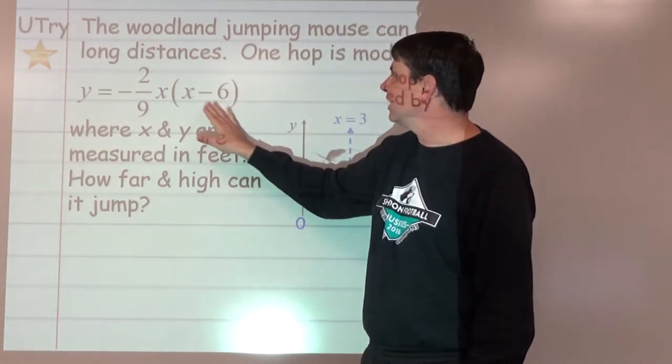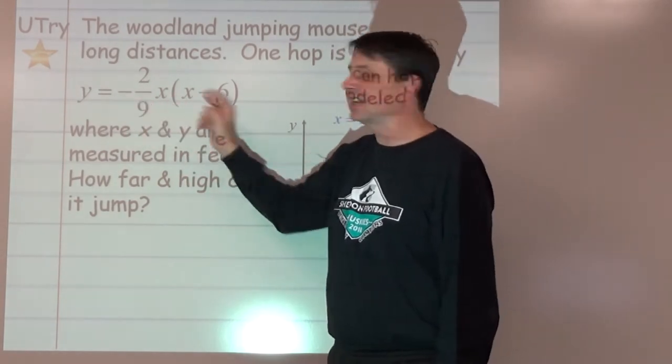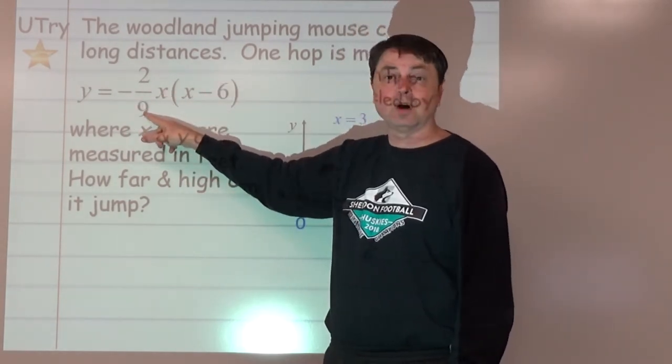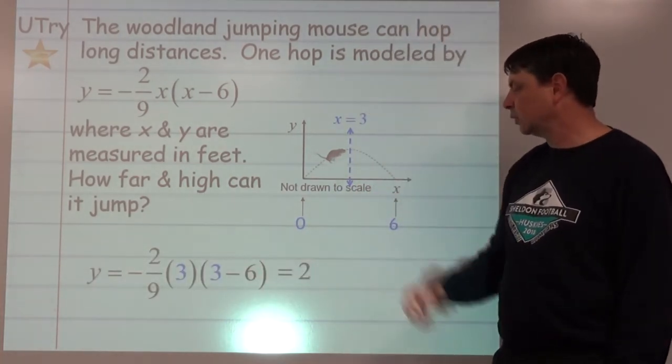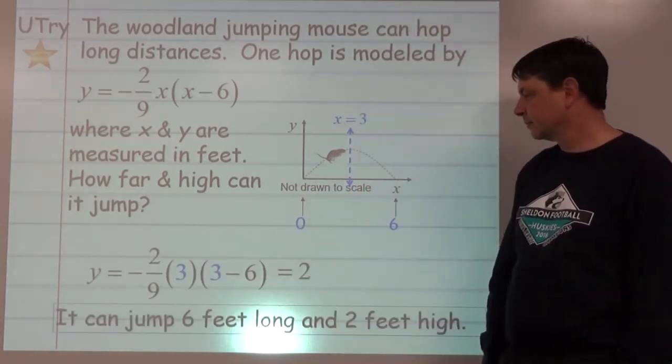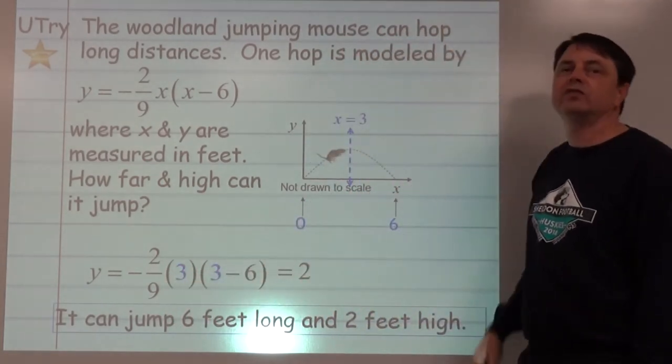So there's our 0 and our 6, which gives us our axis of symmetry at x equals 3. We plug that in: basically 3 times (3 minus 6). 3 minus 6 is negative 3. 3 times negative 3 is negative 9. The negative times the negative is a positive, so 9 divided by 9 is 1 times the 2, and we're going to get 2. So it can jump 6 feet long and 2 feet high.